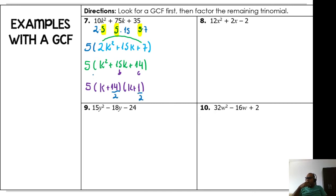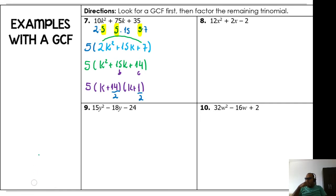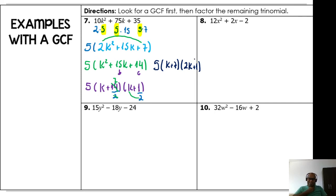Reduce the fractions: 14 divided by 2 is 7, and 1 divided by 2 — I can't divide, so I slide the 2 up next to the variable, giving 2k. So the final answer is 5(k + 7)(2k + 1). So easy! That's how we finish this one when we have a GCF.